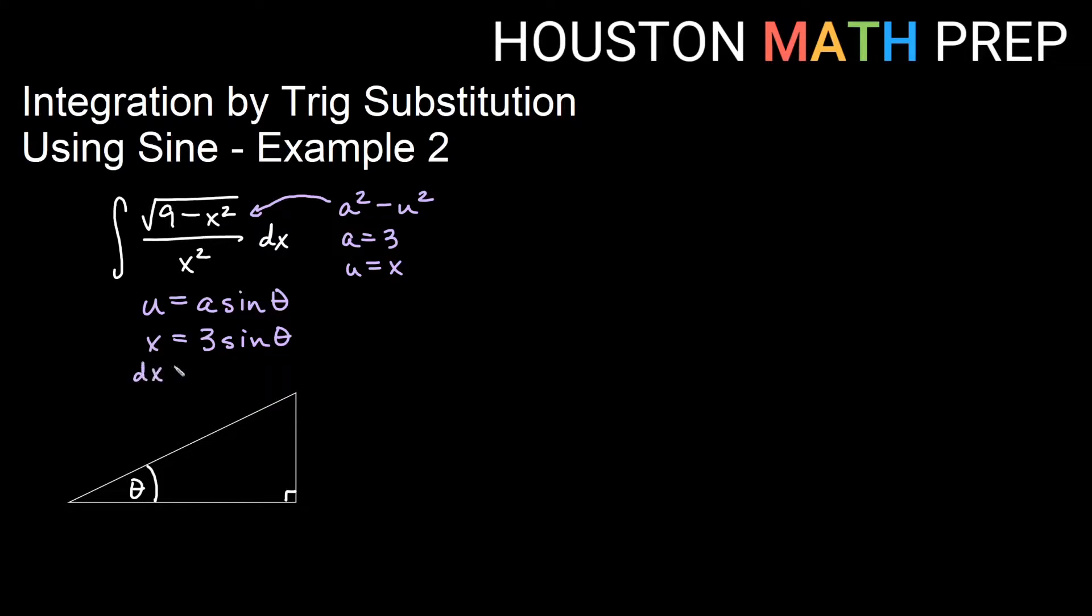So we take the derivative of 3 sine theta, we get 3 cosine theta d theta. Alright, so those will be our substitutions.